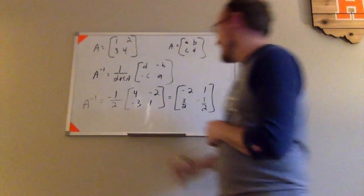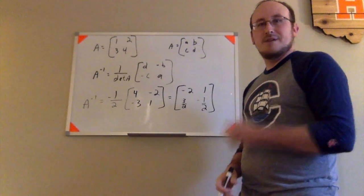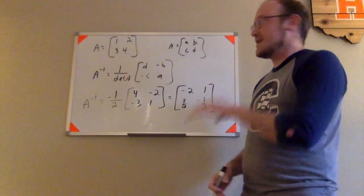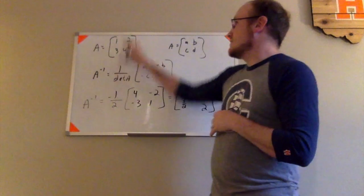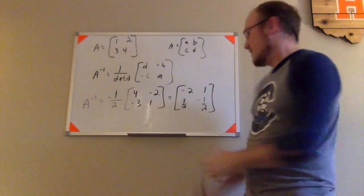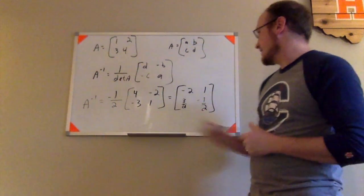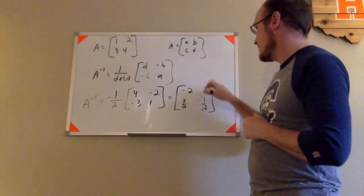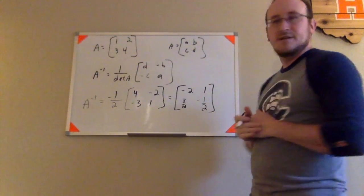negative 1 half times 1 is negative 1 half. So this is the inverse, A inverse like that, and to be able to decode any messages that were originally encoded using the matrix 1, 2, 3, 4, you would have to have this matrix negative 2, 1, 3 halves, negative 1 half.